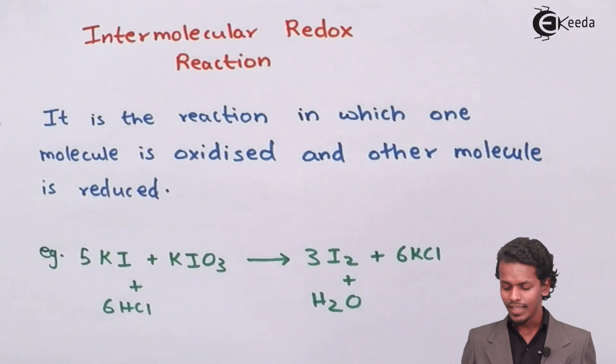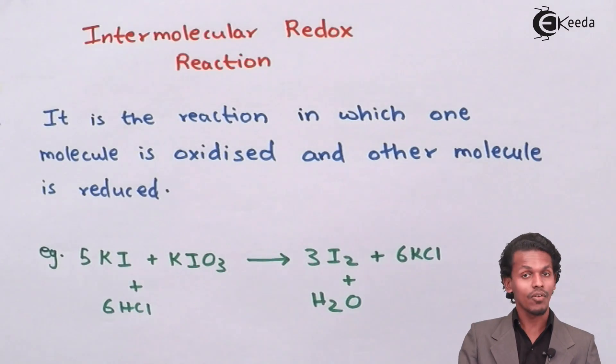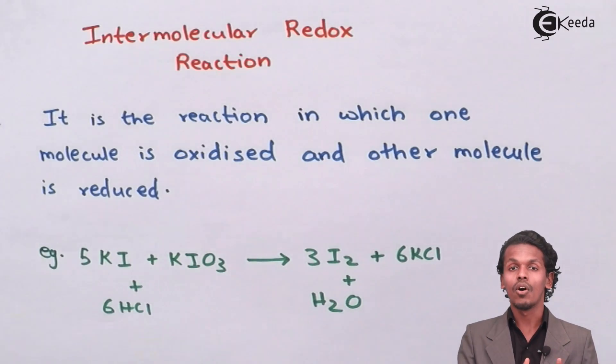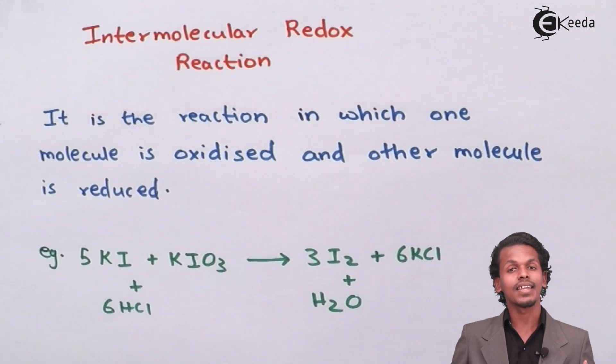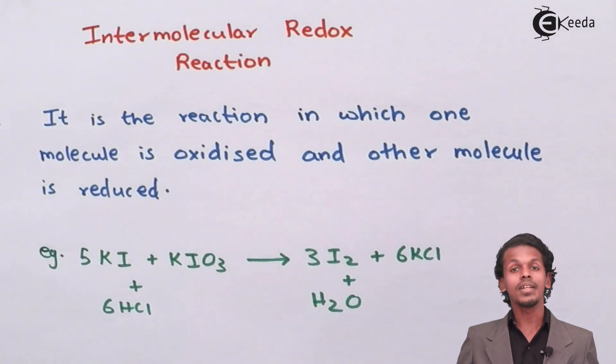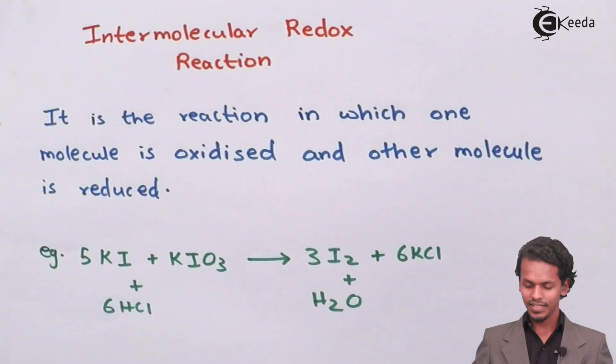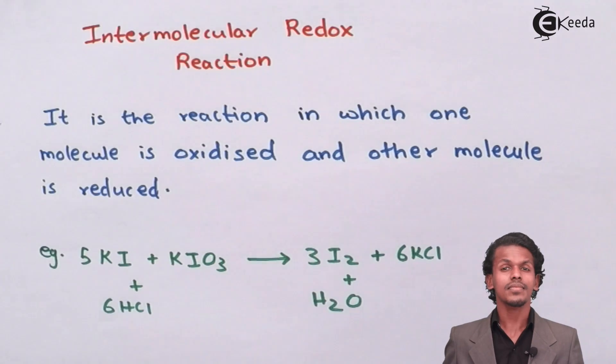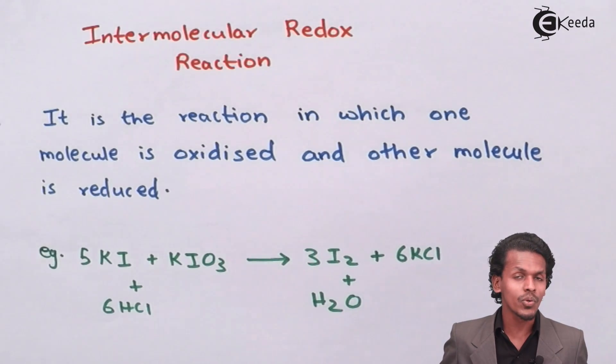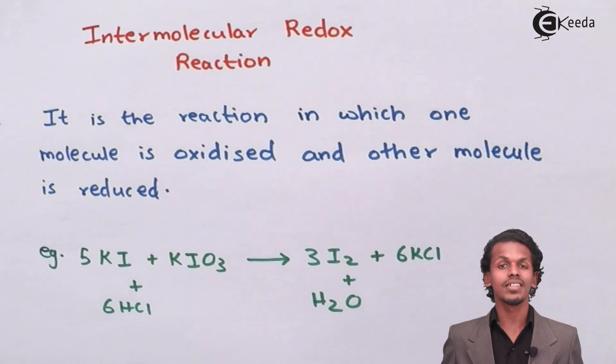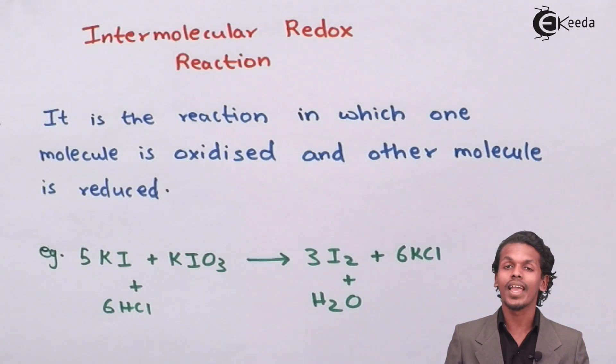But it is very important to understand that the oxidation number of one atom can be changed in the product while the same atom of the element which is present in the reactant can also be changed in the product. It is very important to know that the oxidation number changes from lower to higher as well as from higher to lower.